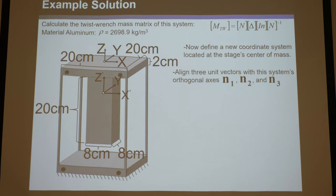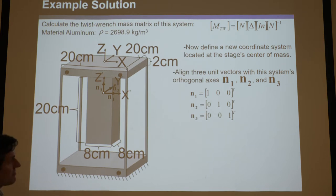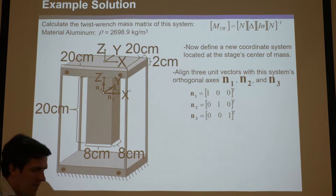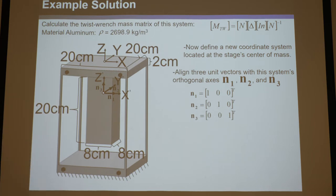Let's define n1, n2, and n3. N1 corresponds with x prime, n2 with y prime, and n3 with z prime. They're no-brainers here since we align them with the global coordinate system — they're just [1,0,0], [0,1,0], [0,0,1]. Make sure their magnitudes are all 1. So we have an L vector of (0, 0, −0.07769 m) and the n1, n2, n3 unit vectors.